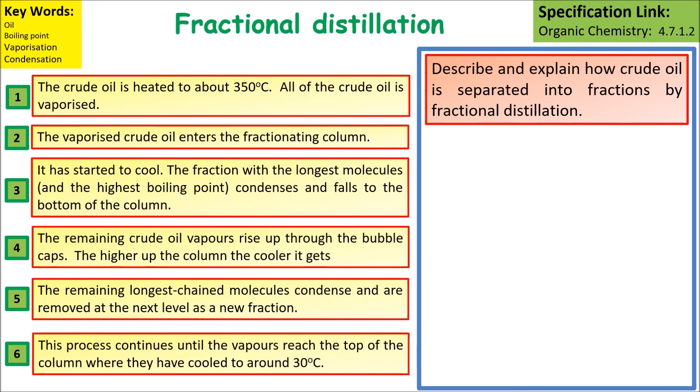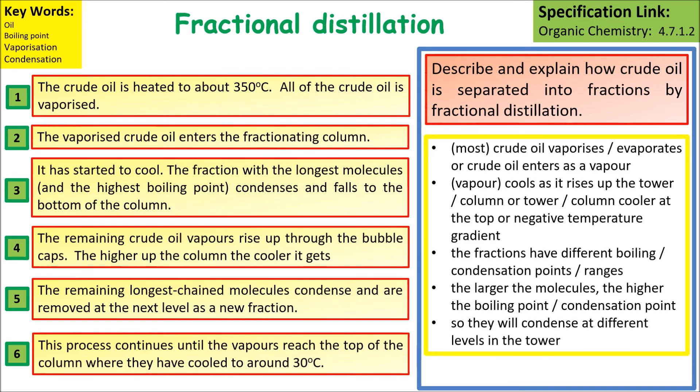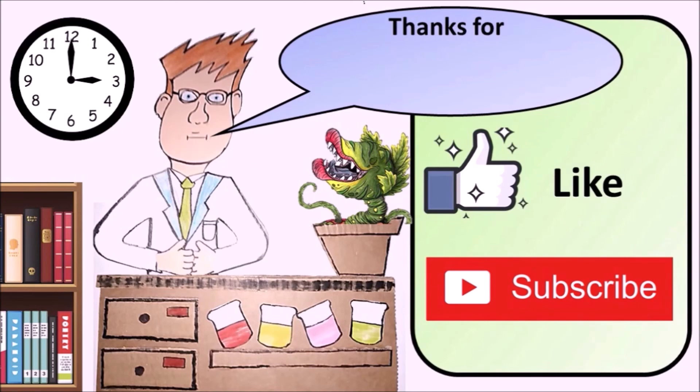When describing and explaining how crude oil is separated into fractions, key things to talk about are: most of the crude oil vaporizes and evaporates; it cools as it rises up the column; the fractions have different boiling points and condense at different points; and the larger the molecules, the higher the boiling point, so they condense at different levels in the tower. Thanks for watching.